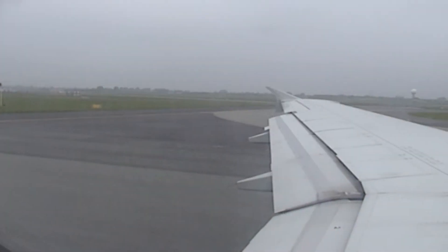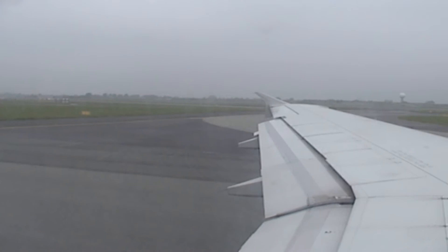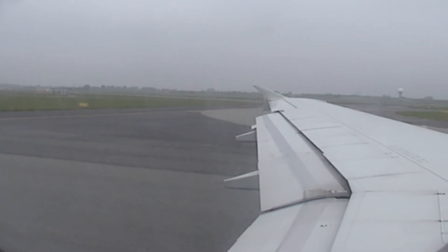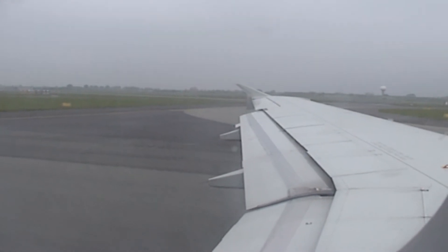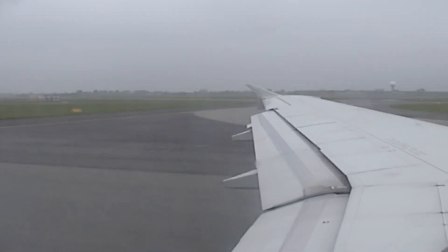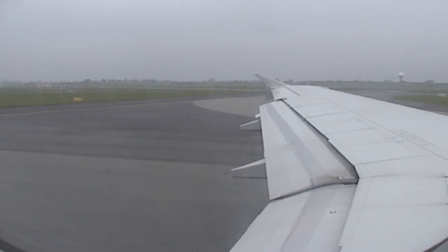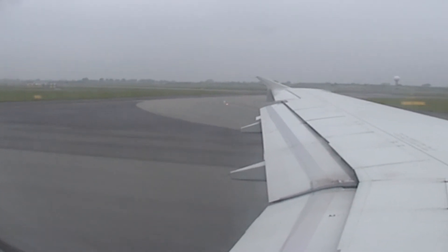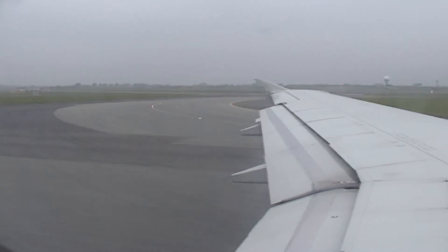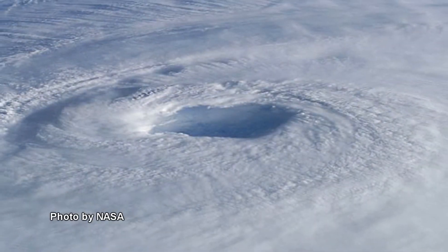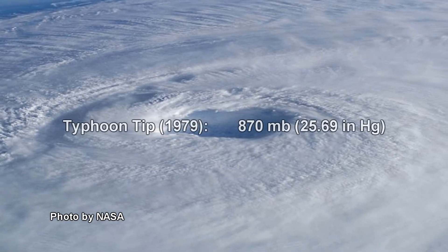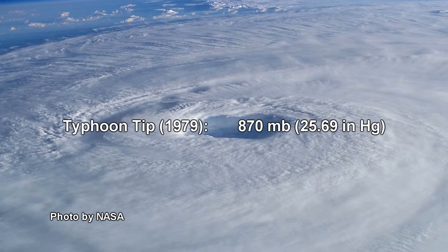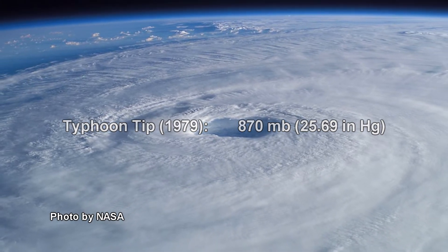One of the drawbacks of the altimeter is that it reacts to weather-related lows and highs. For instance, if you happen to be at sea level and are subjected to a low, the altimeter will not show zero feet but some altitude above sea level. Similarly, if subjected to a high, the altimeter would show altitude below sea level. The lowest atmospheric pressure at sea level ever measured was 870 millibars, or 25.69 inches mercury, in Super Typhoon Tip in the Pacific Ocean in 1979.